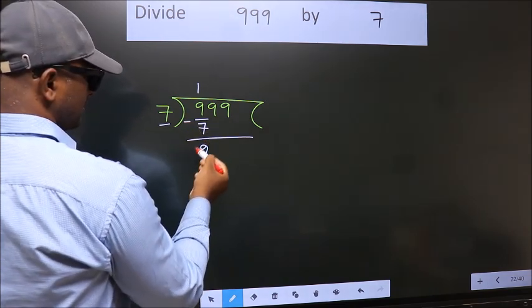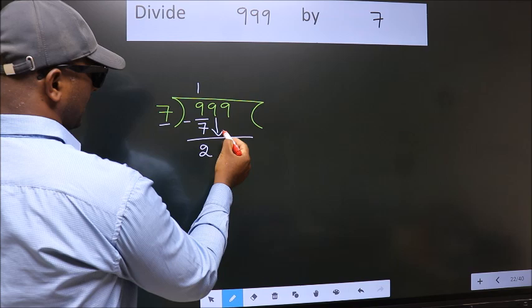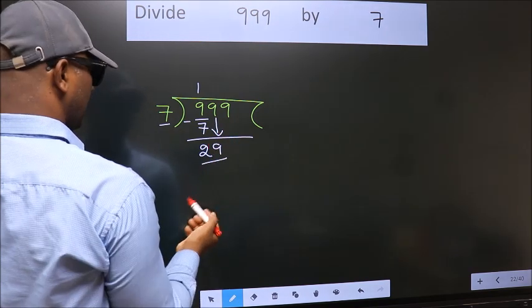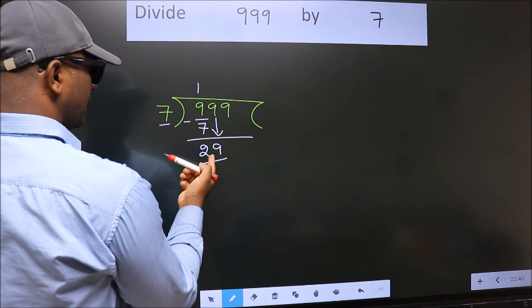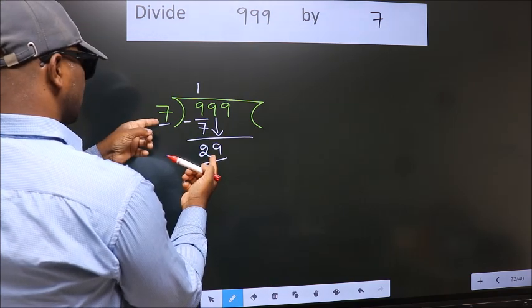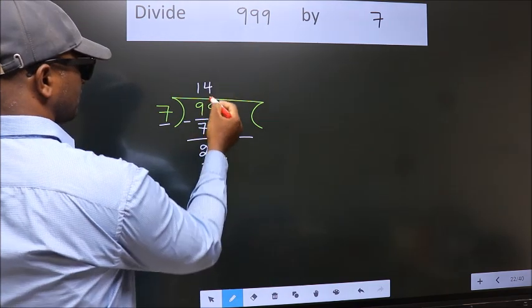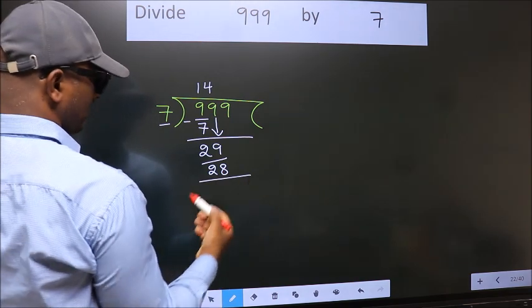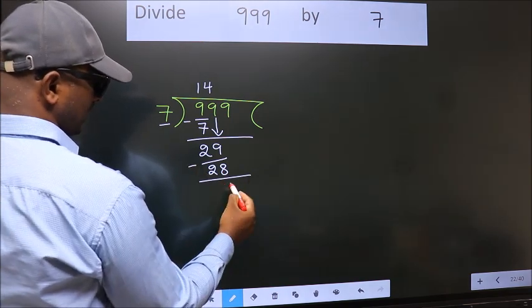After this, bring down the beside number. So, 9 down. So, 29. A number close to 29 in 7 table is 7 fours 28. Now, we subtract. We get 1.